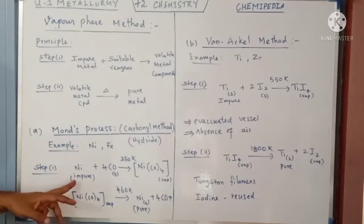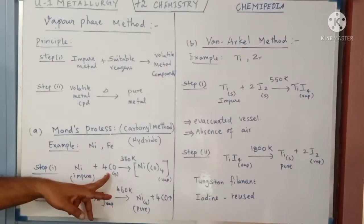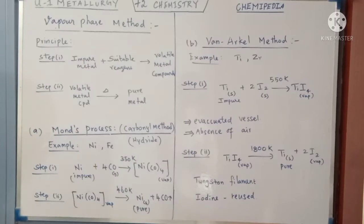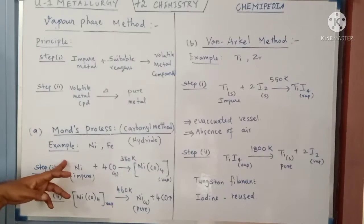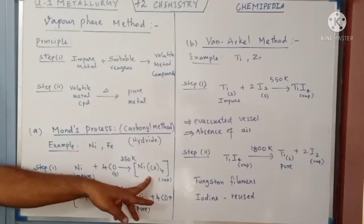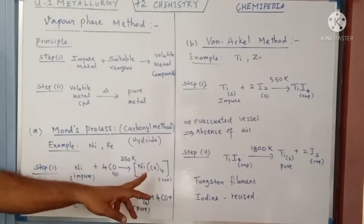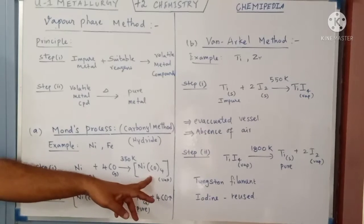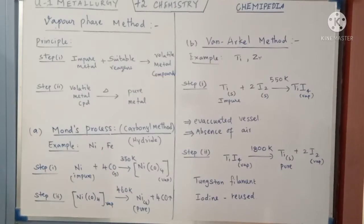First, we take the impure metal and treat it with carbon monoxide gas, heating at a temperature of about 350 Kelvin. Only the nickel metal will react with carbon monoxide and form a volatile complex compound called nickel tetracarbonyl, Ni(CO)₄. The impurities remain in a non-volatile state.